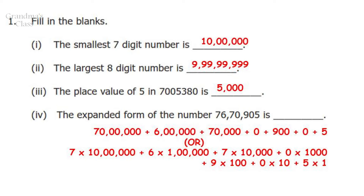Third one: The place value of 5 in the given number is 5000. Fourth one: The expanded form of the number 76 lakhs, 70,905 is 70 lakhs plus 6 lakhs plus 70,000 plus 0 plus 900 plus 0 plus 5.